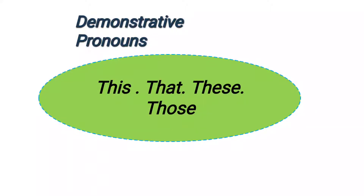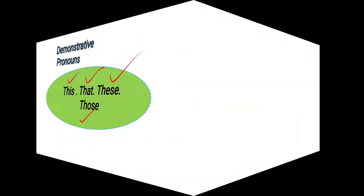Demonstrative means to point out something. So demonstrative pronouns are used to point out or show the objects to which they refer. The words we use to demonstrate are: this, that, these, and those. These are the words we use to point out or show the objects to which they refer.